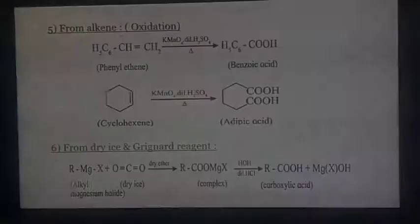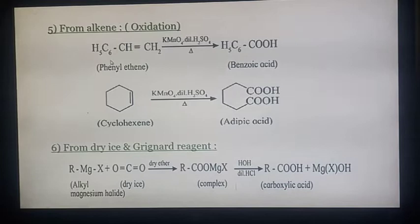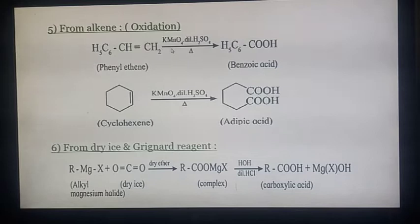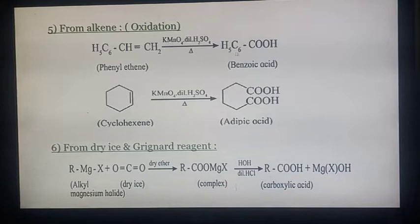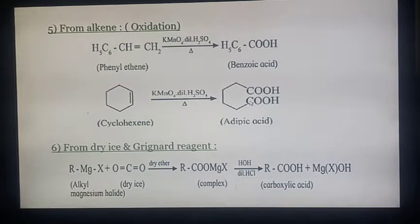Next method is from alkene by oxidation. For example, phenylethene (C₆H₅–CH=CH₂), also called styrene, when oxidized in presence of KMnO₄ and dilute H₂SO₄, gives benzoic acid. Another example is cyclohexane: when cyclohexane is heated in presence of KMnO₄ and dilute H₂SO₄, it gives adipic acid — a dicarboxylic acid.